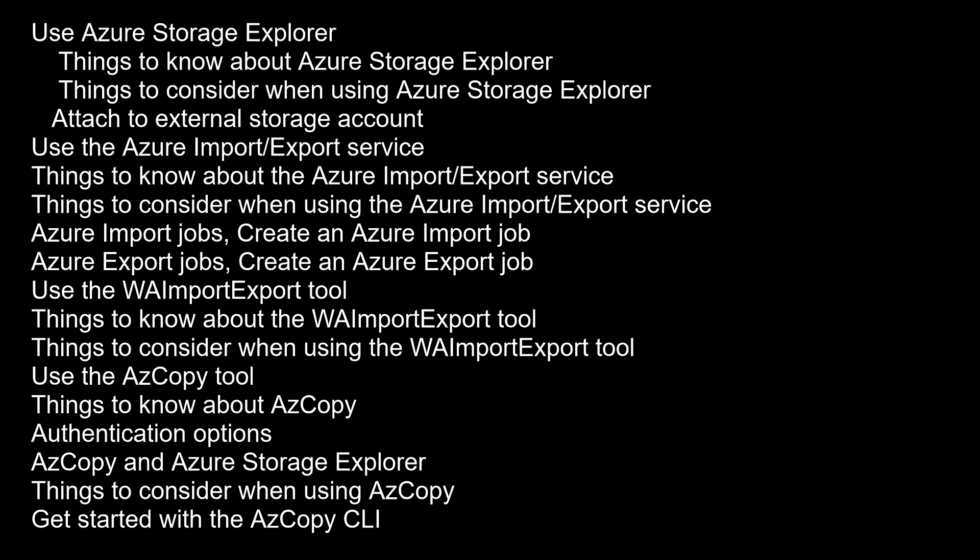Azure Storage Explorer lets you attach to external storage accounts so storage accounts can be easily shared. To create the connection, you need the external storage account name and account key. In the Azure portal, the account key is called Key1. To use a storage account name and key from a national Azure cloud, use the storage endpoint's domain drop-down menu to select Other and then enter the custom storage account endpoint domain.